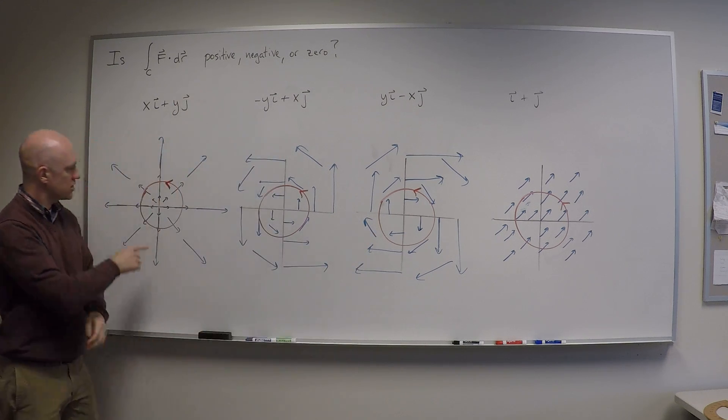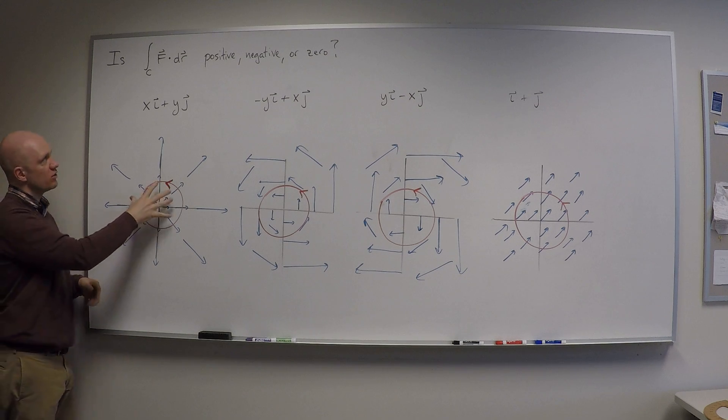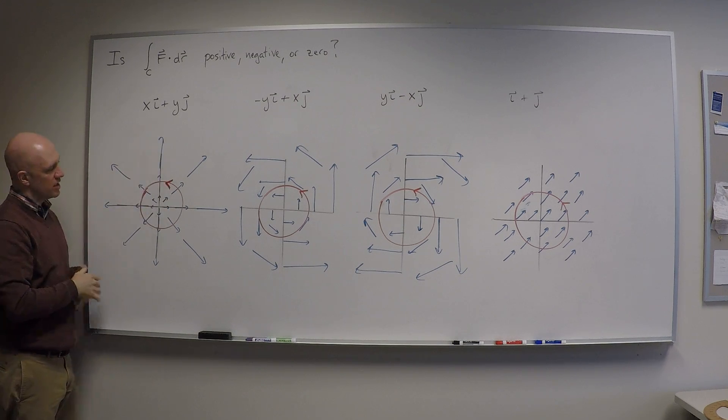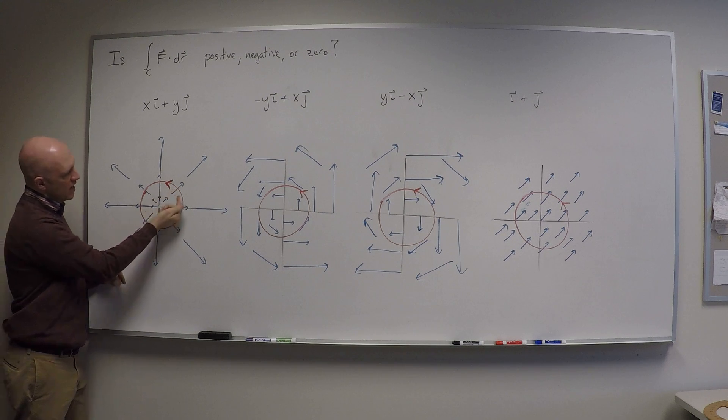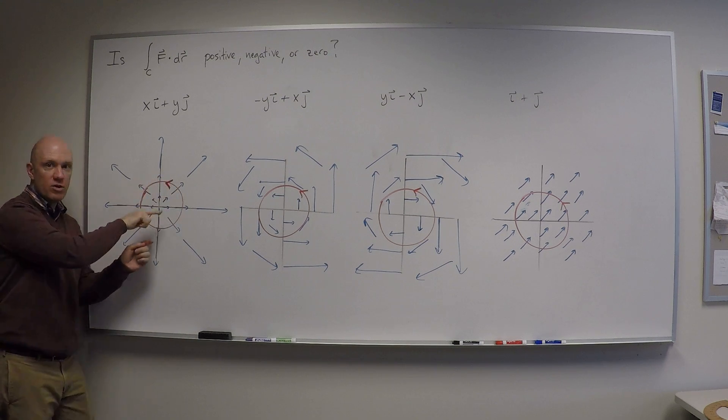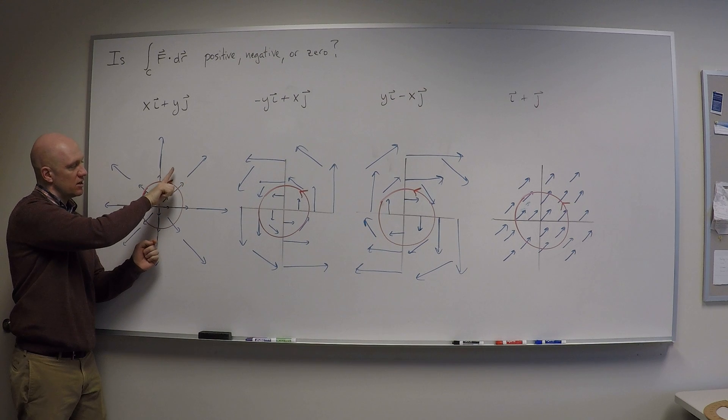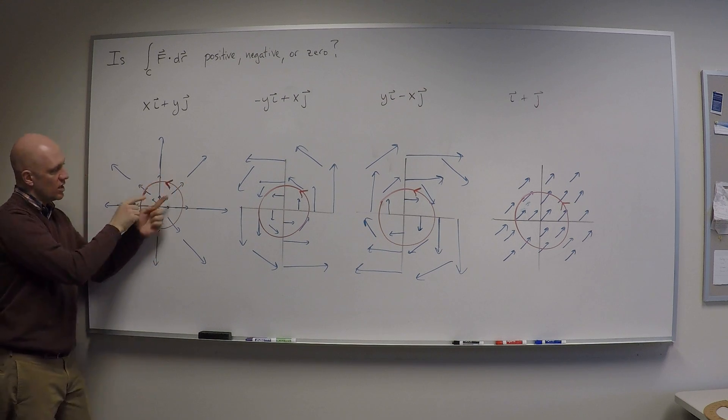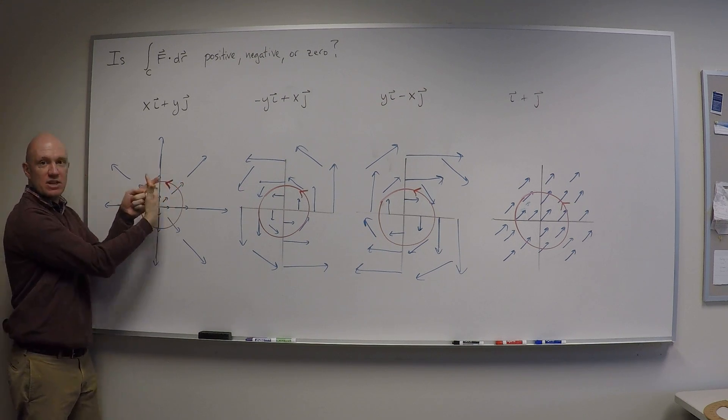Now let's come back to this one. This is a radial vector field xi plus yj. In this vector field, as I'm moving around everywhere, the vector is perpendicular to my path, and so the vector field and the path are kind of indifferent to one another.